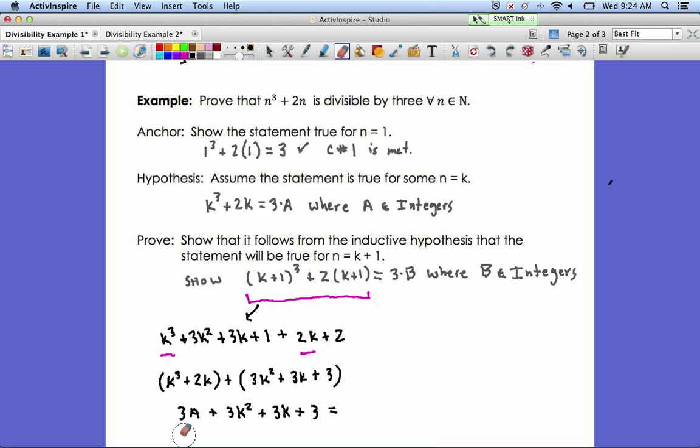And there it is. k cubed plus 2k became 3a and I rewrote everything else. And there should be a little bit of rejoicing at this point because every single term in it has a 3.